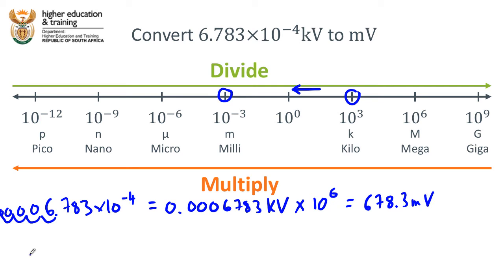To double-check: we move the decimal point six places to the right — one, two, three, four, five, six — and yes, we get 678.3. We have gotten rid of the 10 to the six and replaced it with the millivolts unit. That is our conversion from kilovolts to millivolts.